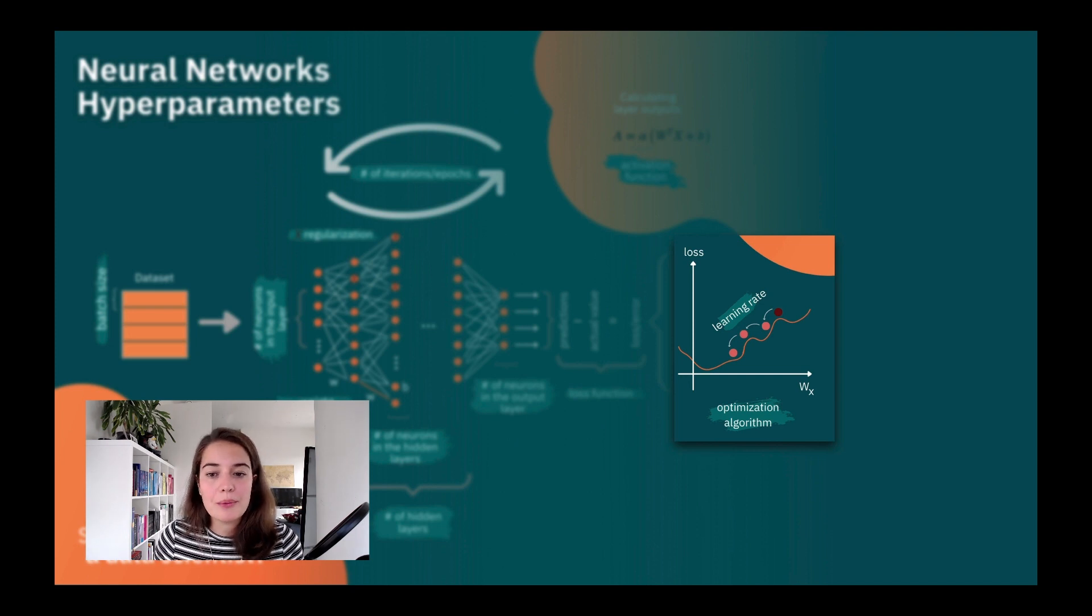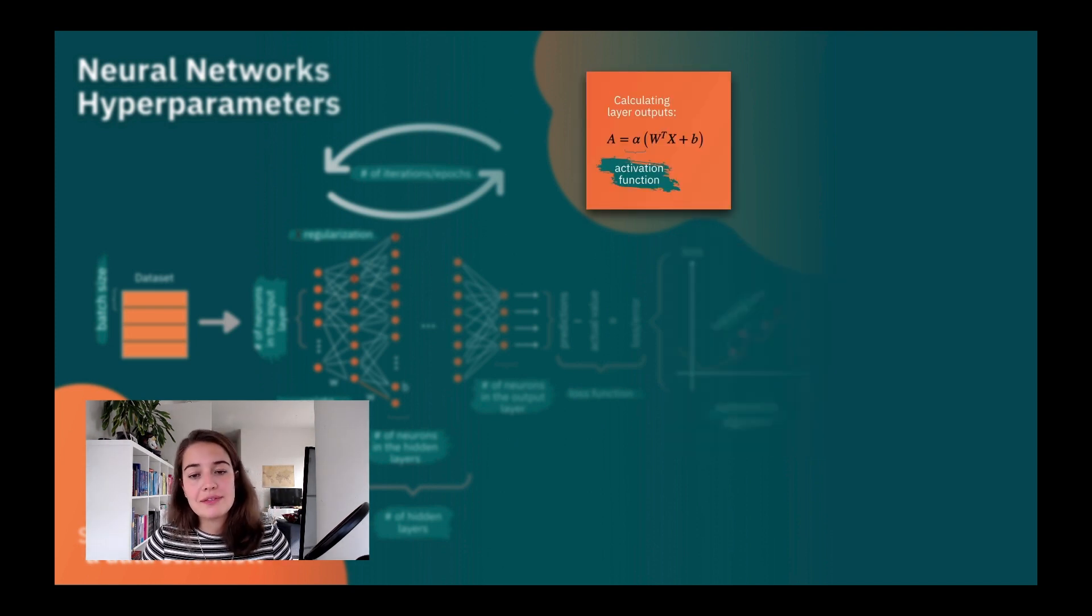The next thing is the activation function. So I don't know if you're familiar with this, but this formula tells you how to calculate the output of one layer. So the W, the big W, is a matrix or a vector of all the weights that belong to the connections, and B is a matrix or vector of biases that belong to each of the neurons in this layer, and X is basically the input.